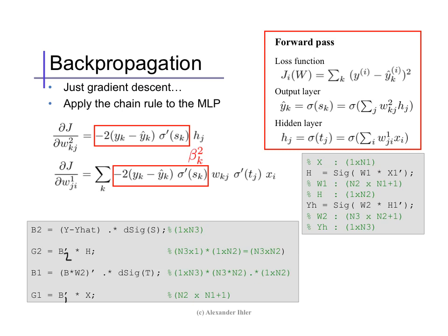In code, this is usually implemented as an easy recursion, computing the beta terms and derivatives recursively starting with the last layer and moving backwards to the first. So let's suppose there are n3 output nodes, n2 hidden nodes, and n1 input nodes. Then, the beta values at layer 2, b2, are just y-hat times the derivative of sigma at value s — a vector indexed by node k, so it's length n3. We can then use this to compute the gradient of the weights at layer 2. This is a matrix — the outer product between b2 and h — of size n3 by n2, which is the same size as the weight matrix of the second layer.